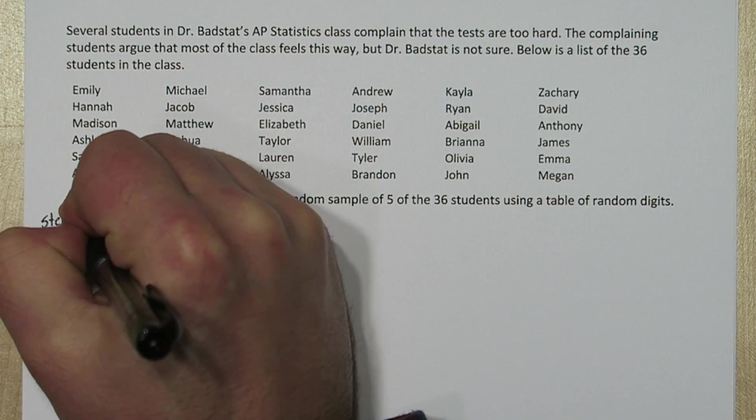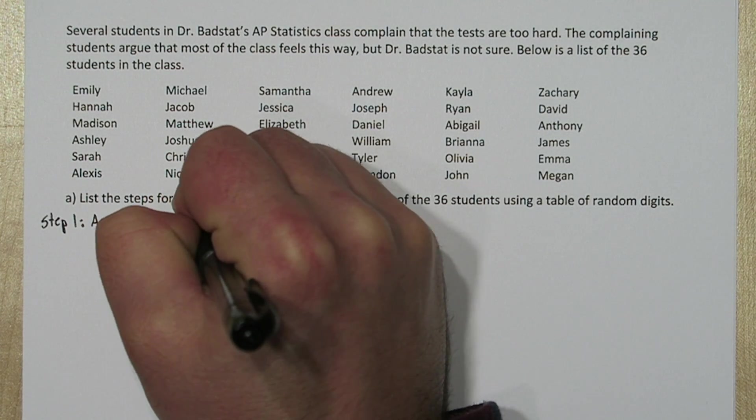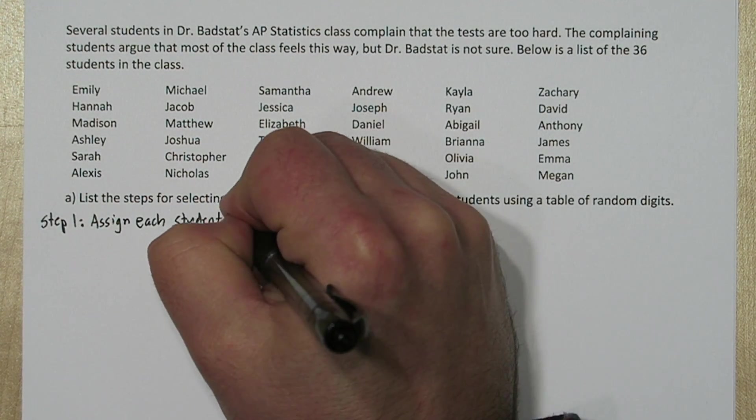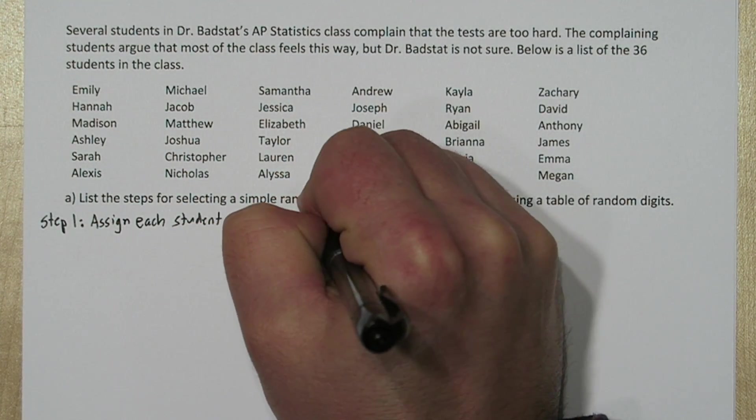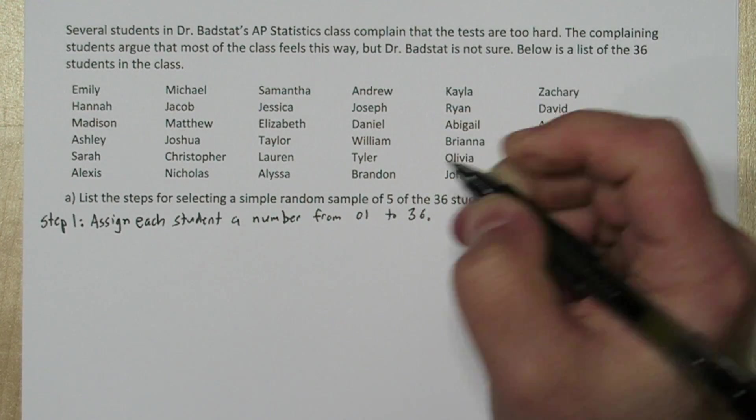Our first step is going to be to assign each student a number from 01 to 36. Now it's important you don't start at 1, you have to start at 01 because each number we assign to the students has to be two digits long.